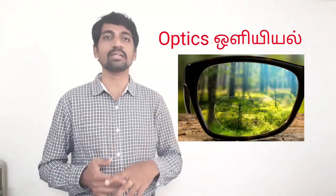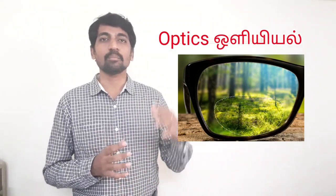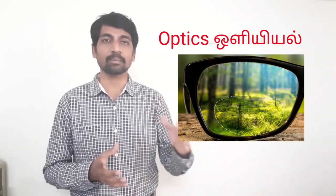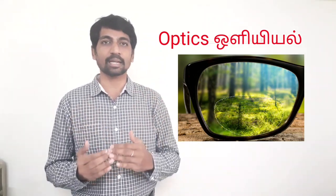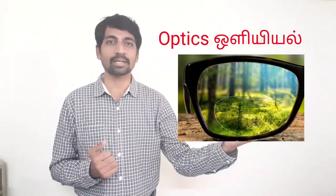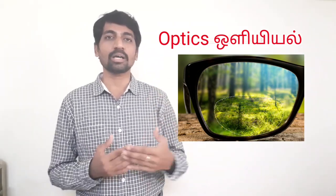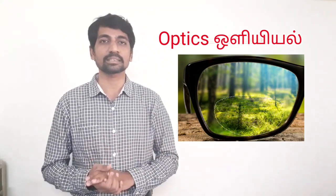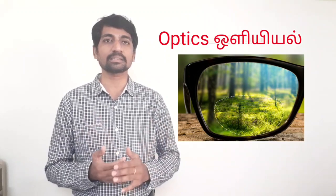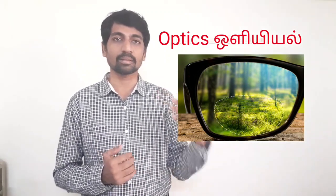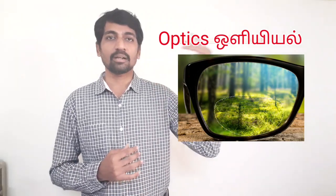In a bifocal lens, the upper part contains a concave lens to correct myopia — allowing the person to see distant objects clearly. The lower part contains a convex lens to correct hypermetropia — allowing the person to see nearer objects clearly at long distance.